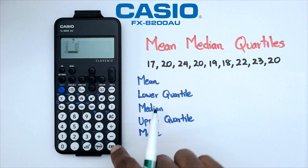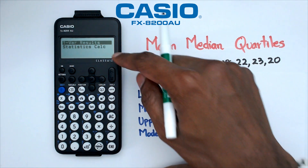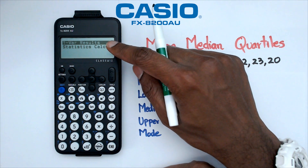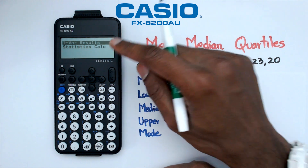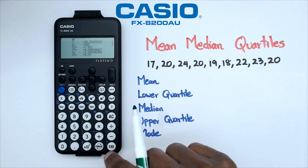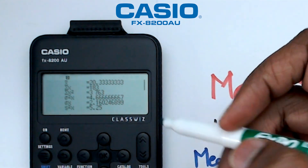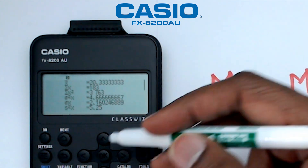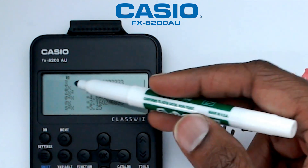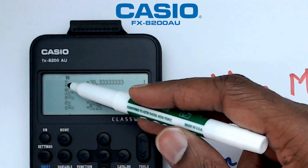What we're going to do now is simply press EXE, and that will take you to a menu where it asks for one-variable results. We can click on that straight away, and as you can see, there is a whole lot of information appearing here. You might need to look at it a little bit closer.